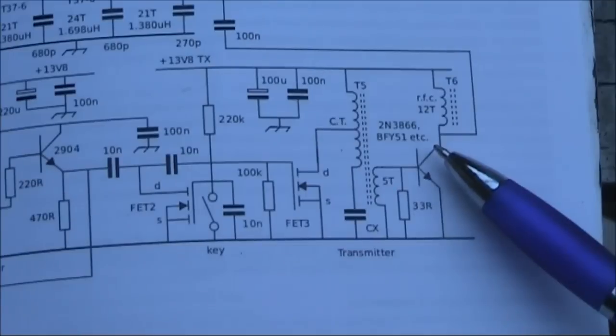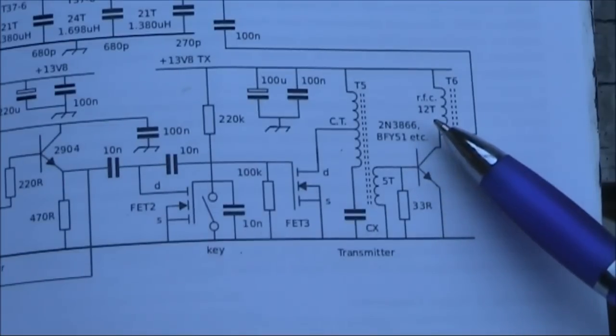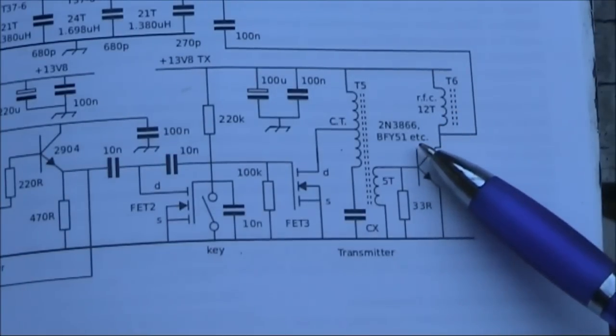However, at different frequencies, their performance varies. The TIP3866 is a good VHF transistor, so it would be fine if you're using it on 14 meg. Whereas the BFY51 cuts off at around 10 or 14 meg, its gain will be much lower there than on seven or three and a half.